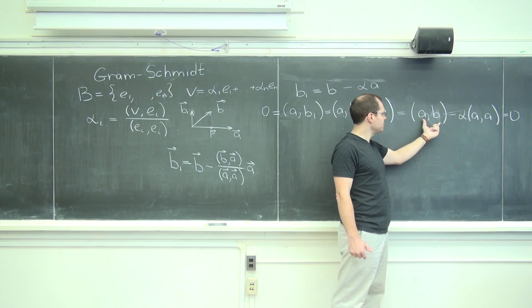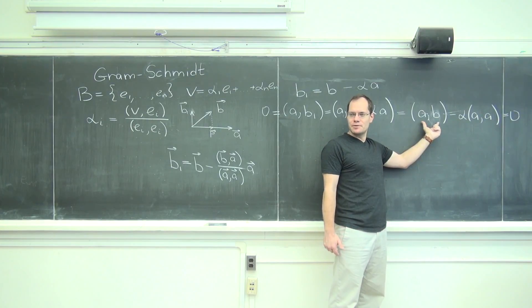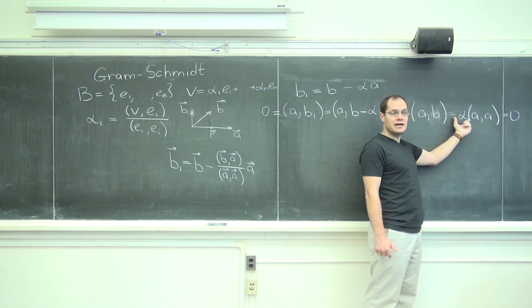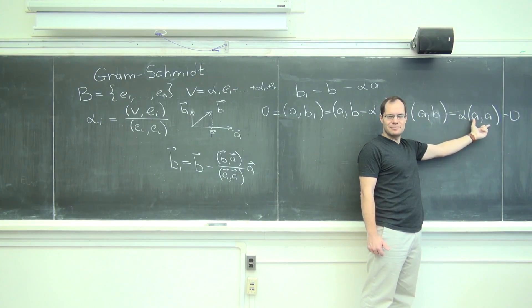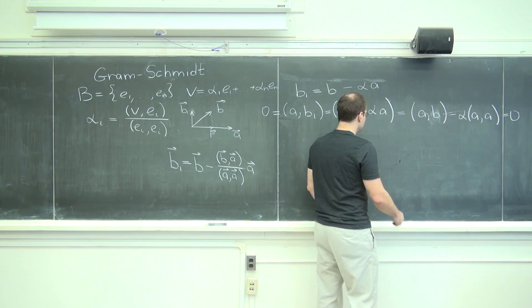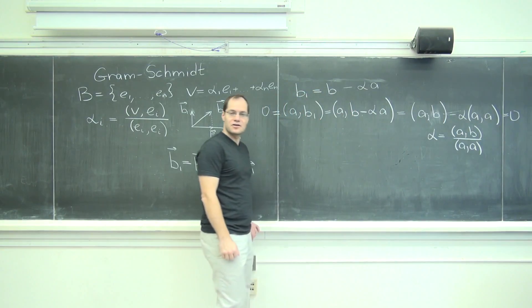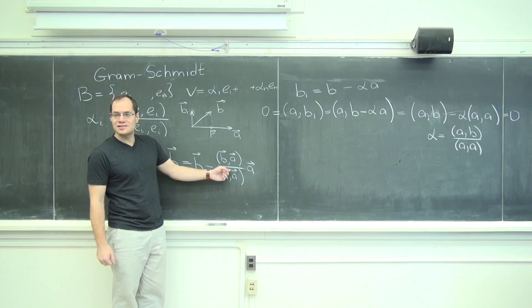It looks complicated, paren letter comma letter paren, but it's just a number. Minus alpha, my unknown number, and then another number. So it's just ax plus b equals zero. I know how to solve this: alpha equals a dot b over a dot a.